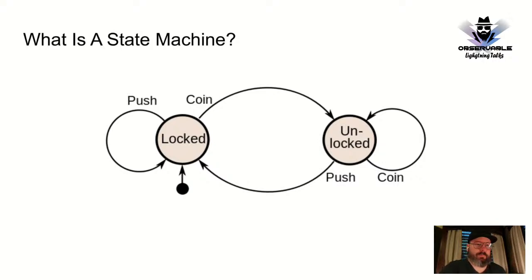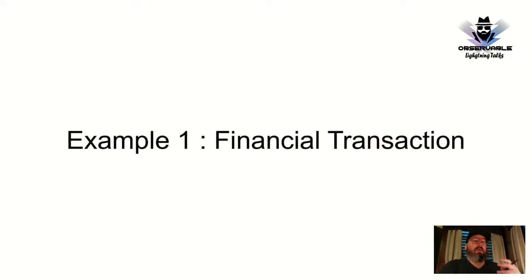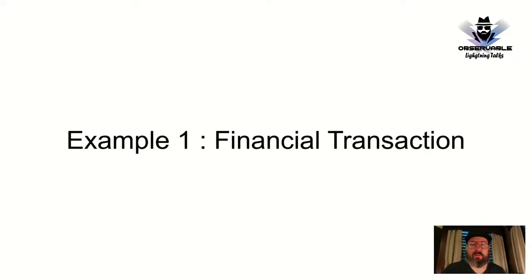This is a discrete finite state machine — only two states and two transitions. However, many things that software developers, SREs, and DevOps practitioners work with end up looking like state machines but are fantastically more complex and convoluted.